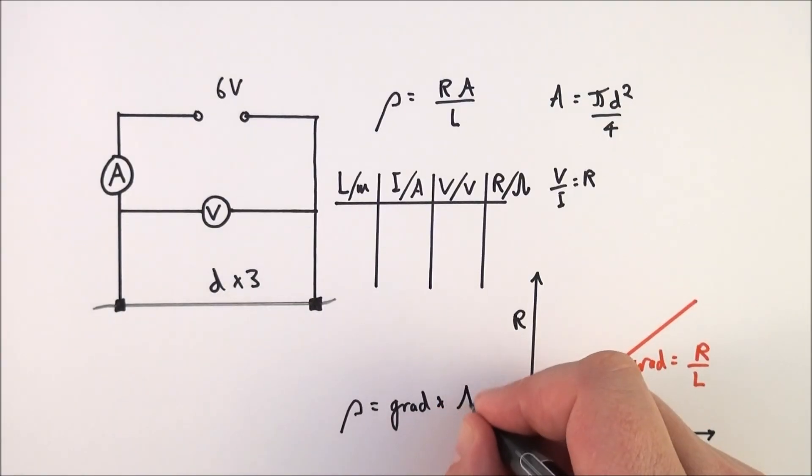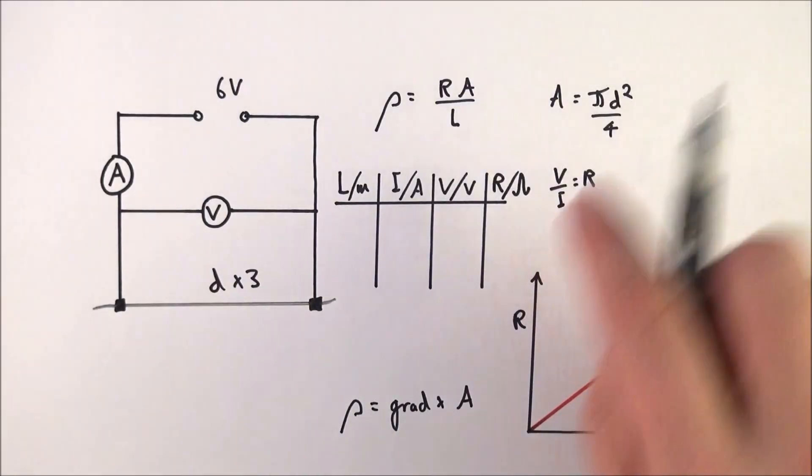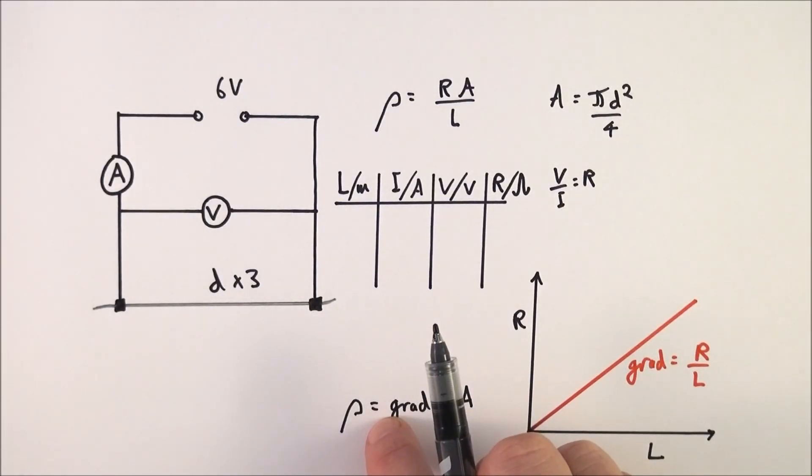Multiply by the area that you've worked out when you measured the diameter of that wire. Once you get the gradient, you just multiply it by the area and you should get a value for the resistivity of constantin.